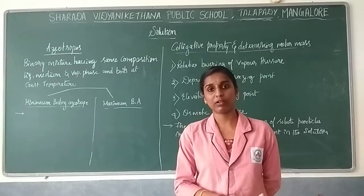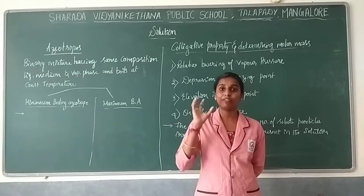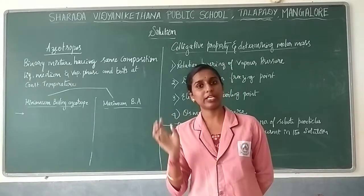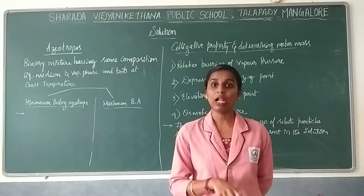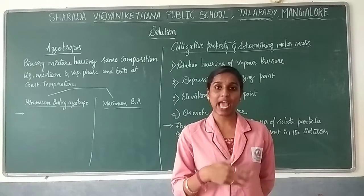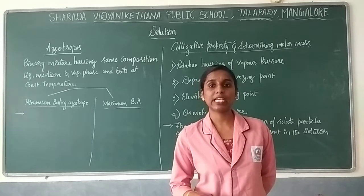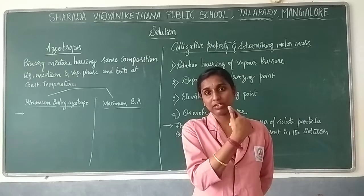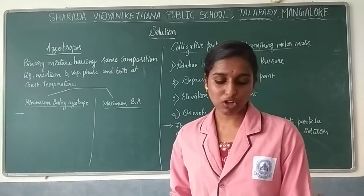In positive deviation, the reactants have stronger force of attraction between them, while the products have weaker force of attraction. Due to this weak attraction in the product, vapor pressure is higher. Even at lower temperatures, the liquid can turn into vapor. ΔH and ΔV are positive values. In negative deviation, the force of attraction is stronger in the product side, giving higher vapor pressure on the reactant side, with negative ΔH and ΔV values.